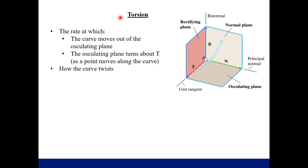Now we'll mention torsion, and in the next video I'll walk through an example covering all of this material. Torsion is the rate at which the curve moves out of the osculating plane — the rate at which the osculating plane turns about the unit tangent vector as your point moves along the curve, or simply how the curve twists. The osculating plane contains both T and N. The normal plane contains N and B, and the rectifying plane contains T and B. The torsion relates to the twisting out of the osculating plane.